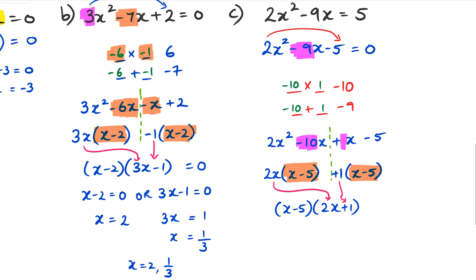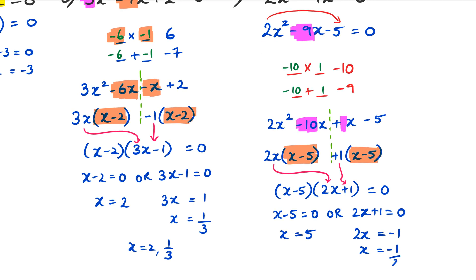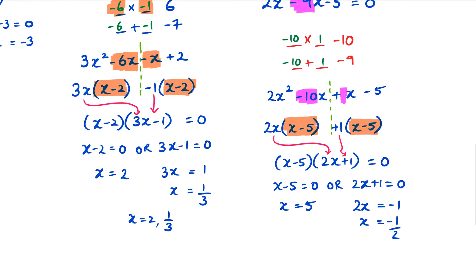Since all of this equals zero, each bracket equals zero. So either x − 5 = 0 giving x = 5, or 2x + 1 = 0 giving 2x = −1, so x = −1/2. The two answers are x = 5 or x = −1/2.